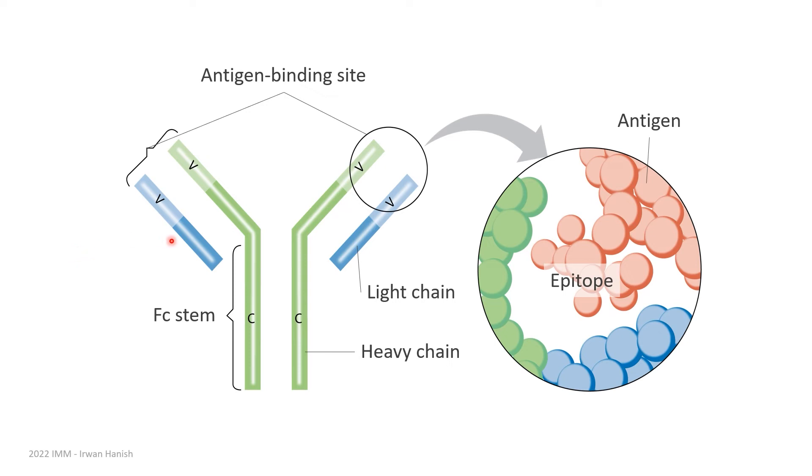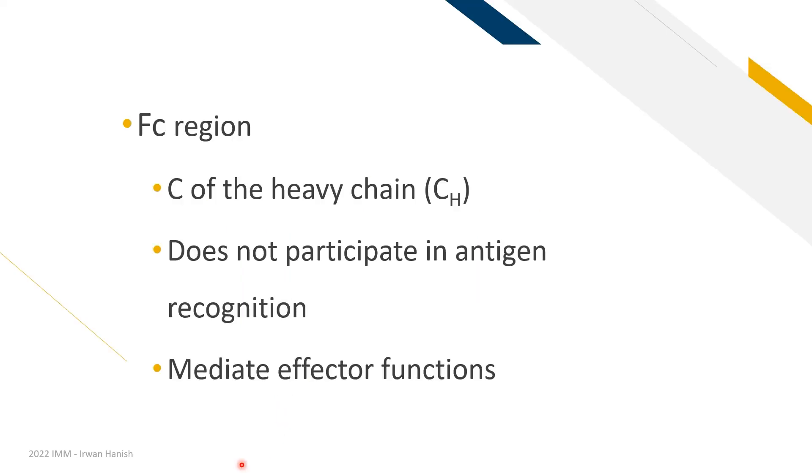And we can juxtapose that against the FC region, which is the stem of the antibody, which consists of the C region of the heavy chain. So the FC region, as opposed to the FAB, the FC region does not participate in antigen recognition. Instead, it is involved in the effector functions, which we'll talk about later when we look deeper into the adaptive immune response.